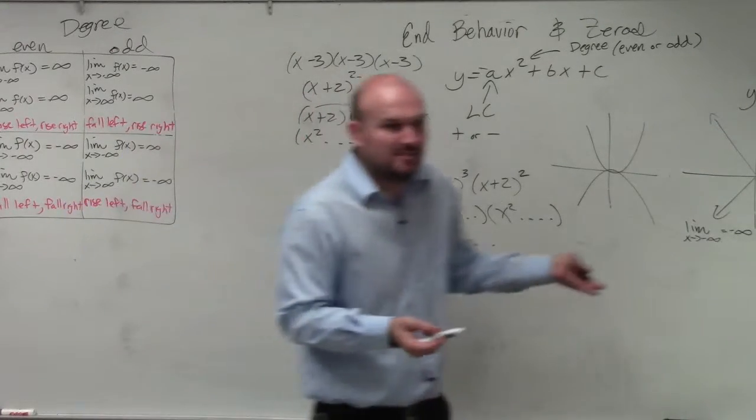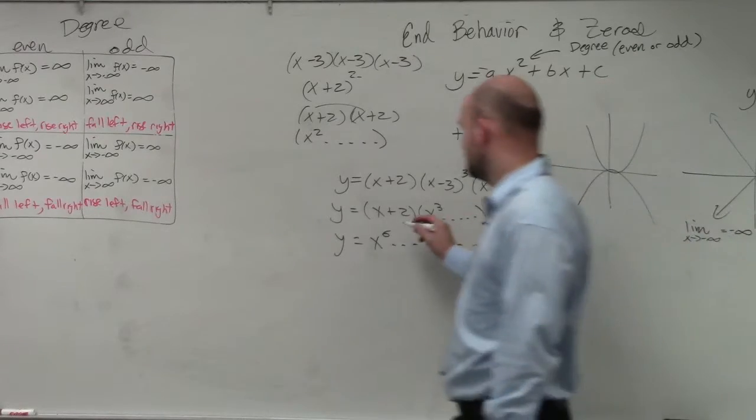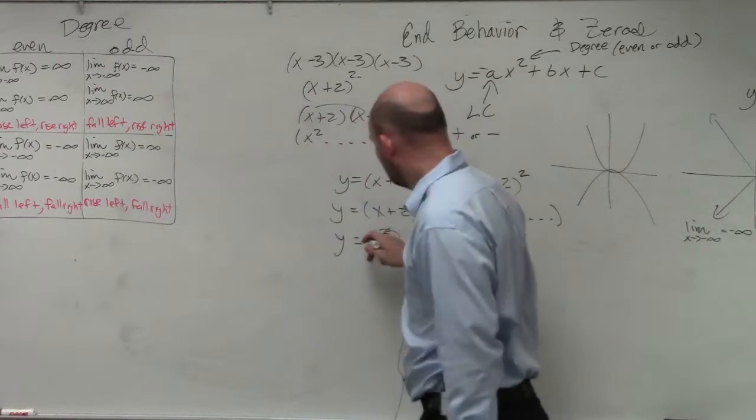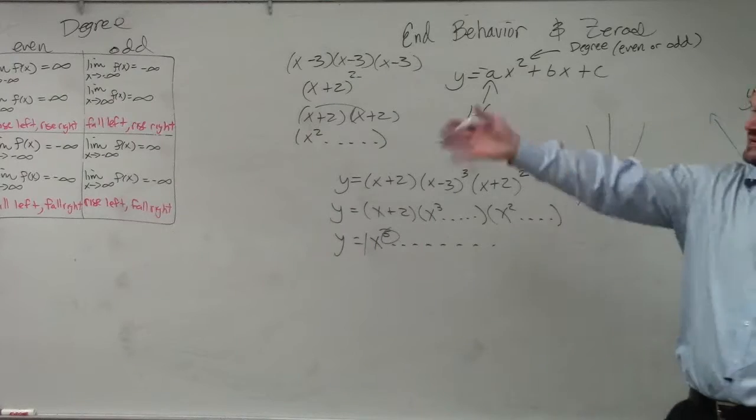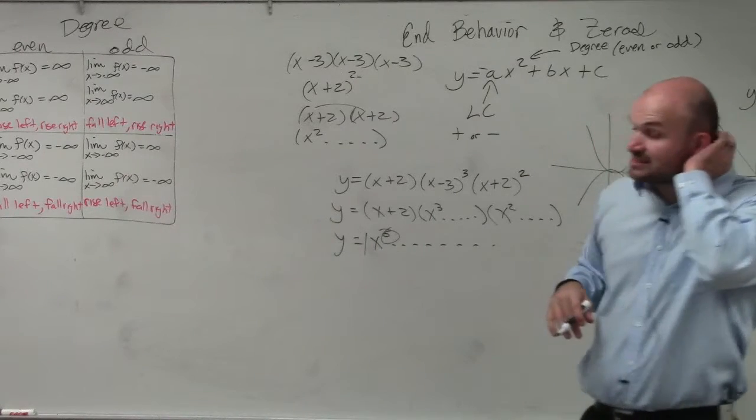Now, do we have enough information to find the end behavior? Yes. Even, positive. Even and positive, then we can say that it's going to rise left, rise right, or what I want you guys to practice on your homework is writing it in terms as the limit.